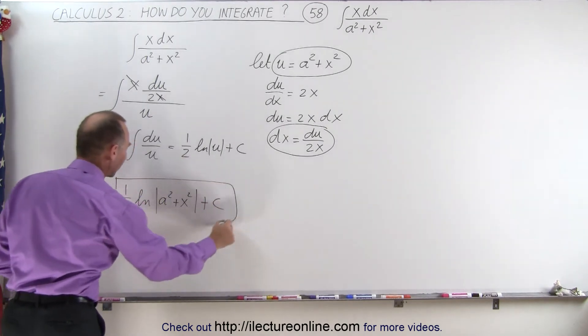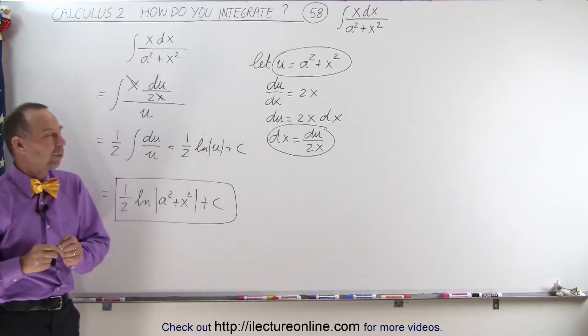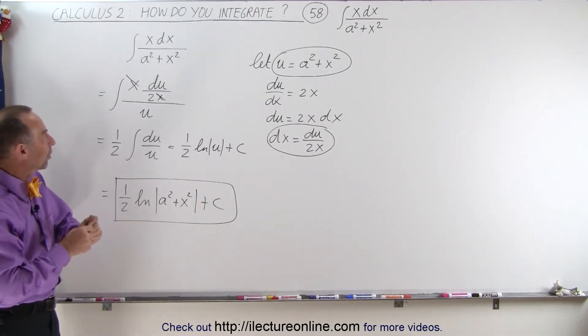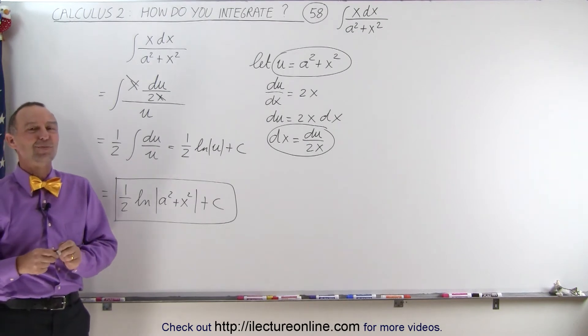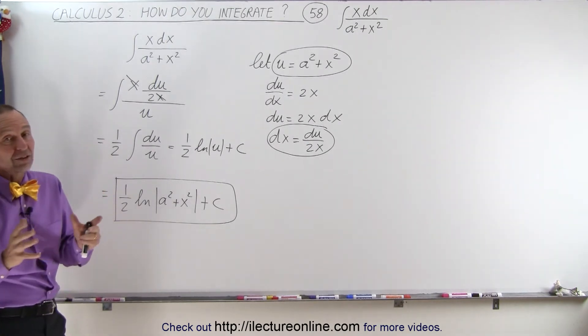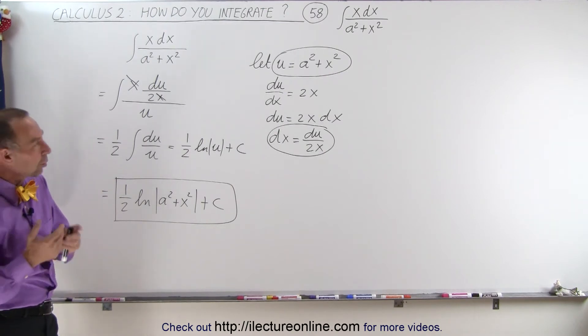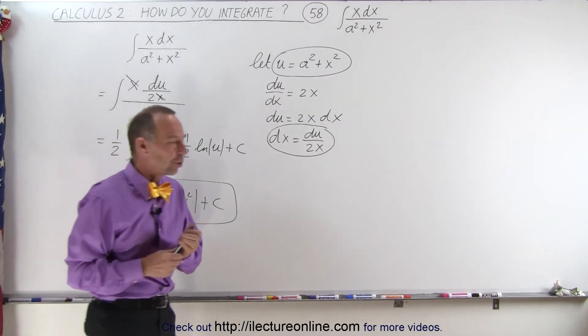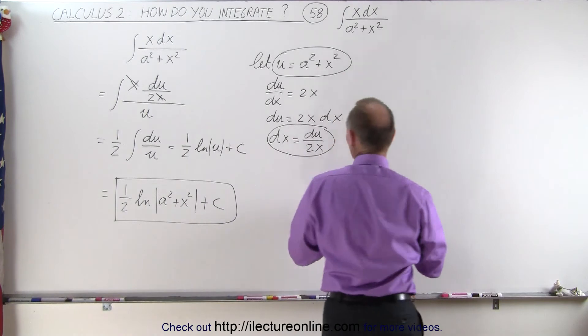So this becomes just a simple substitution of a squared plus x squared equals u. Well, and for those who have done many of these, there's actually an easier way or a quicker way to do an integral like that. So let me show you how to do it in the fast way.